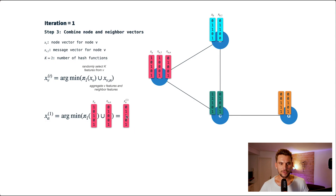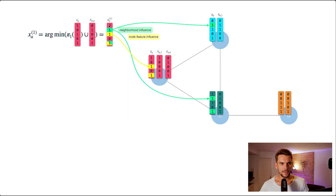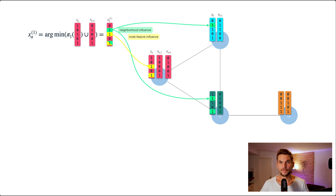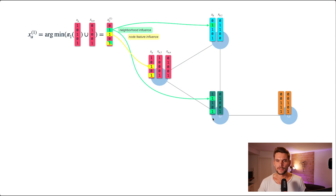When we start the next iteration, we generate message vectors from these node vectors. Looking at the resulting vector, we can trace where each element's influence comes from — for example, a one in the second row has neighborhood influence from nodes b and c, while a one in the third row comes only from the node's own feature vector, and the fifth row has influence from both the node's own feature vector and the neighboring feature vectors.